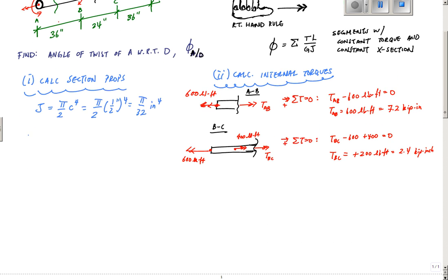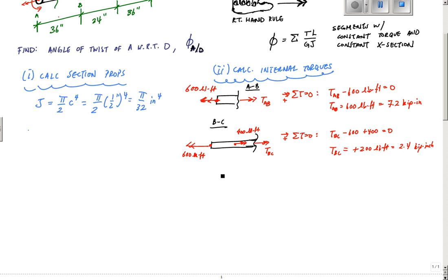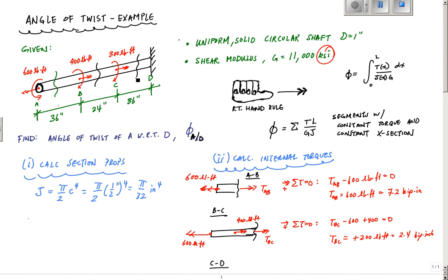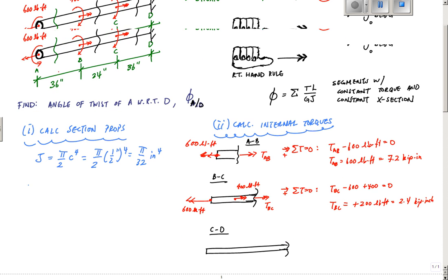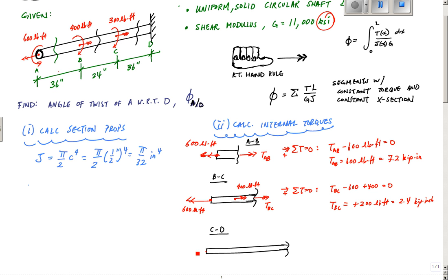For the last segment CD, I make a cut and look at the left side. I have concentrated torques of 600, 400, and 300. For internal torque TCD, summing torques equal to zero with globally positive to the right.